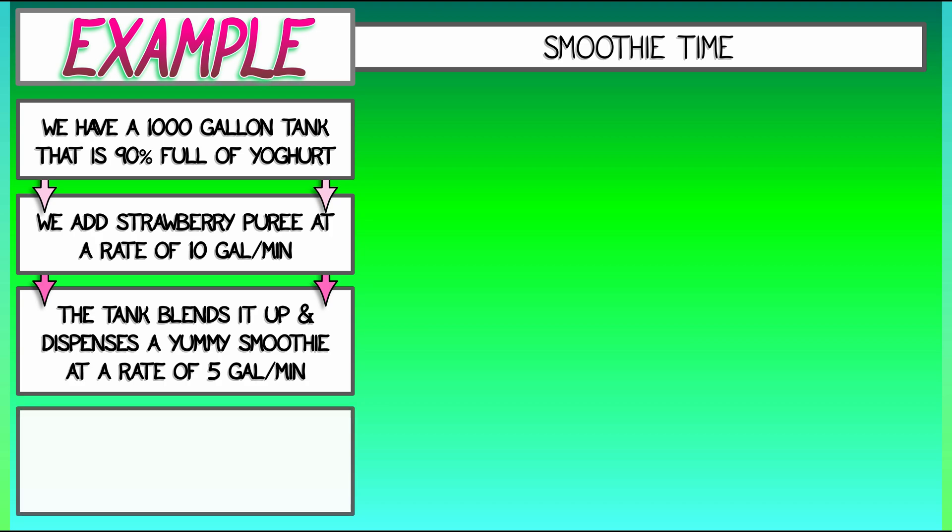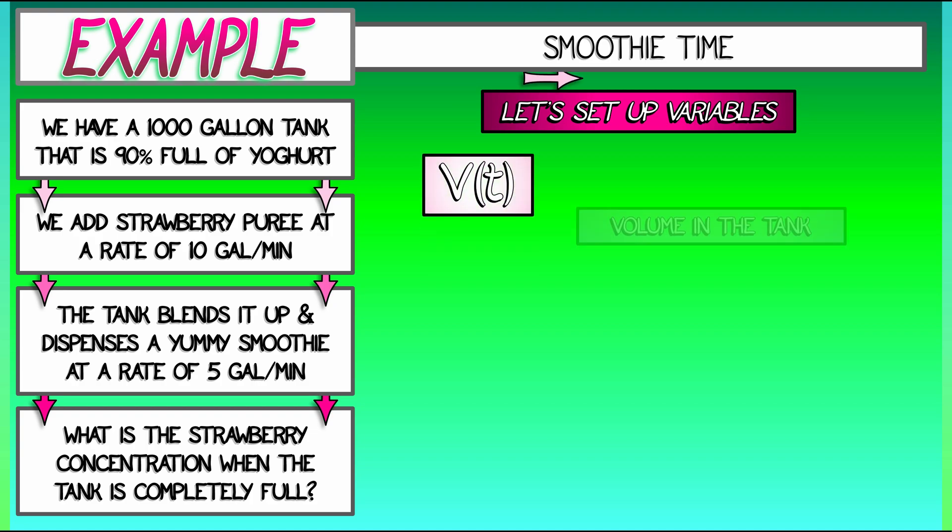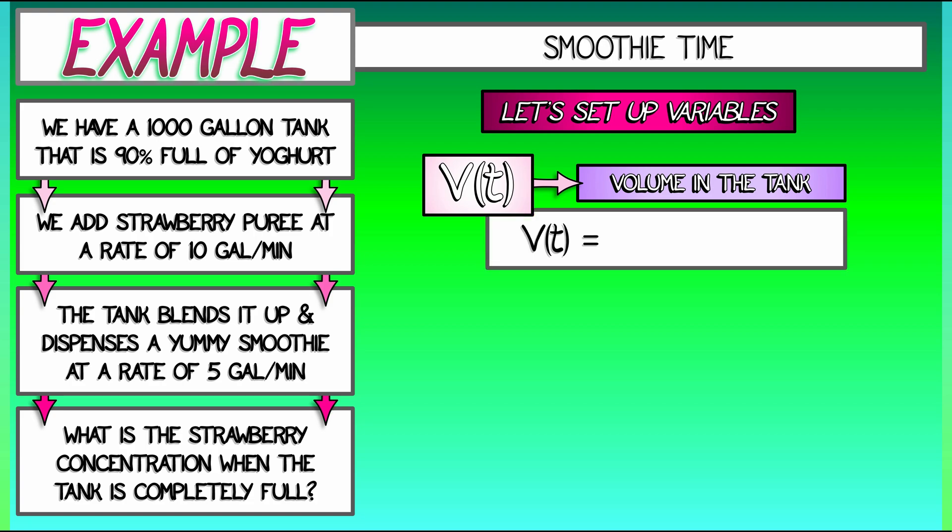Here's the problem. What is the strawberry concentration when the tank is completely full? That is, when we get to the full 1,000 gallons. To solve this, let's set up some variables. Let's begin with the volume. V of t. The volume in the tank. That is what? 1,000-gallon tank starts off at 90% full. That's 900.